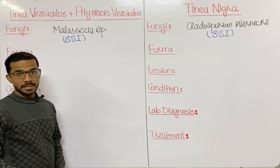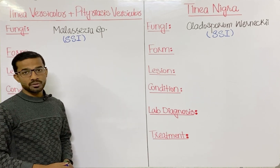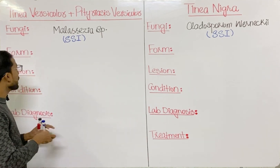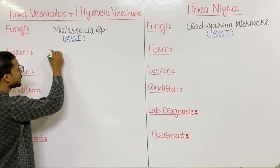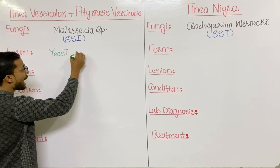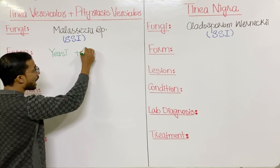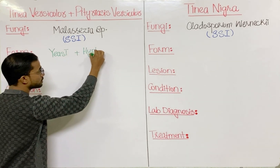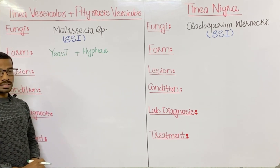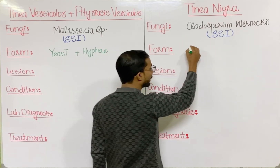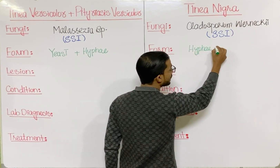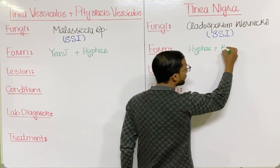In Tinea Versicolor, the fungi can exist in two forms: the yeast form as well as the hyphae form. In Tinea Nigra, you will see hyphae along with budding cells.